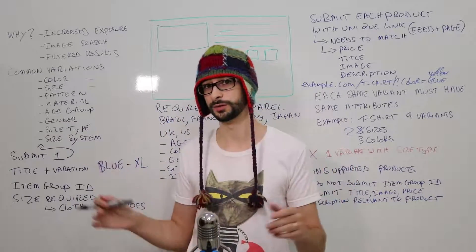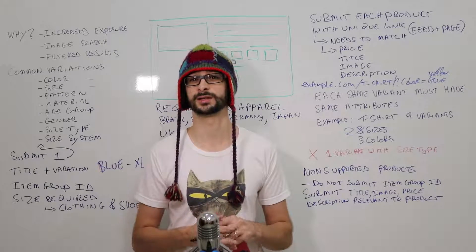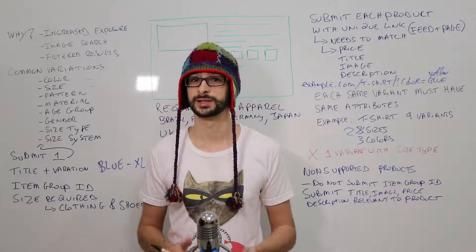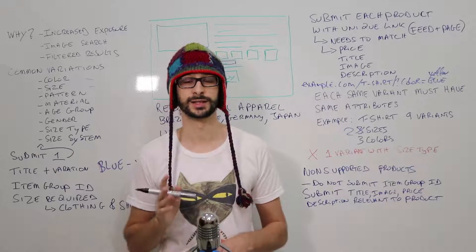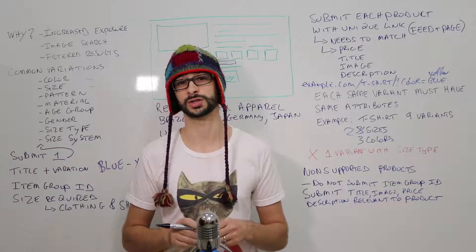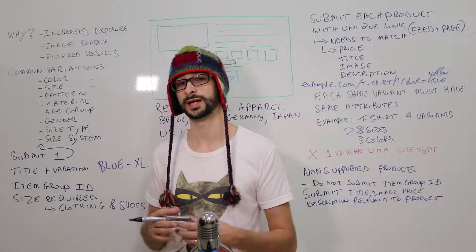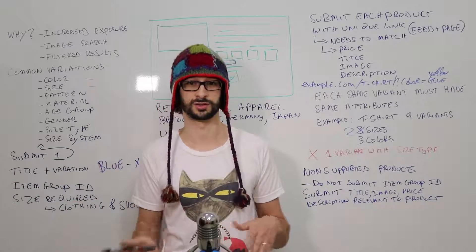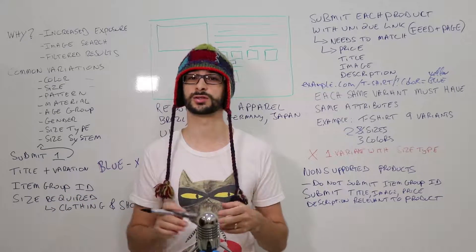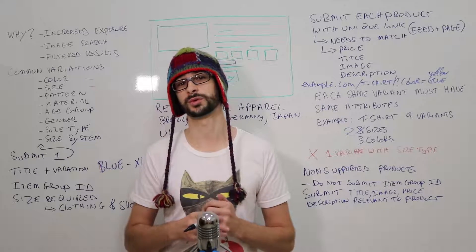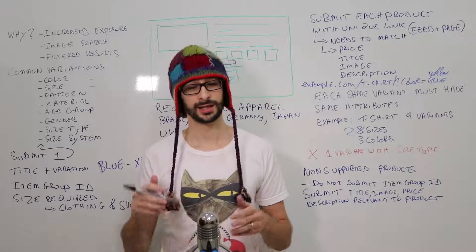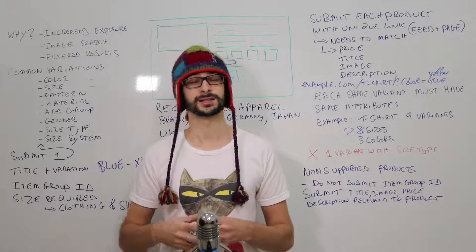That's pretty much everything about variants. I really recommend submitting all the variants because it helps you a lot. Some variant types are less effective than others — for example, colors are very effective for a t-shirt but size is a little less so. It's all based on what your customers are actually searching for, so if nobody searches for that specific term your products won't be listed for it. Go into Google AdWords, do some research, and then submit the correct products you want to target. I hope this video has been helpful — leave a comment below if you have any questions.